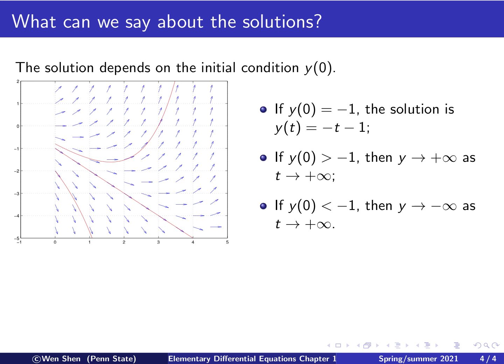So for this example, there seems to be a kind of a bifurcation point right here. If the initial value shall be negative one or less, then your solution will go to negative infinity. But then if you shall be a teeny bit higher than negative one, then the solution eventually blows up to plus infinity.